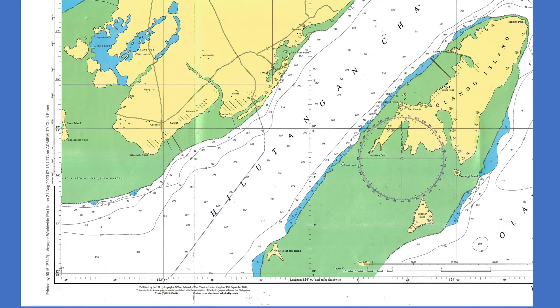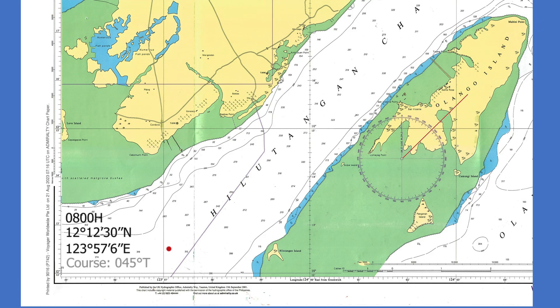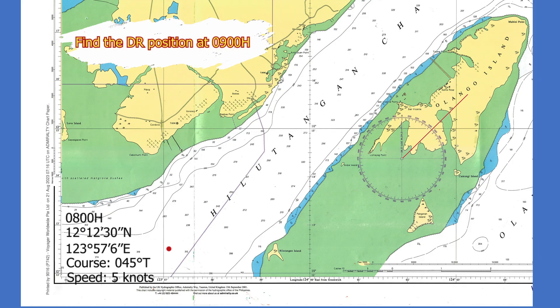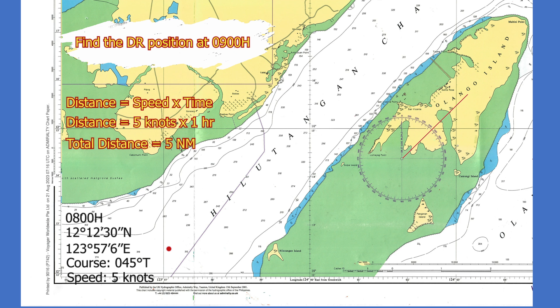Let's say at 0800 hours, your vessel is at position latitude 12° 12' 30" North, longitude 123° 57' 06" East. You're steering 045 degrees true at 5 knots. Find the DR position at 0900 hours. Using the formula, distance equals speed times time: distance equals 5 knots times 1 hour. The total distance is 5 nautical miles.